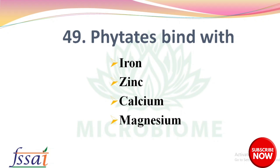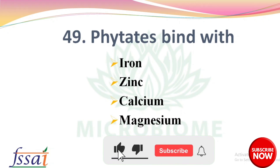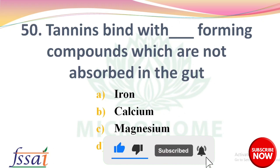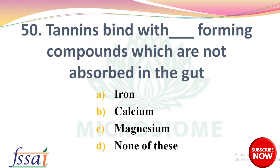Next question: phytates bind with iron, zinc, calcium, and magnesium. Next question: tannins bind with dash, forming compounds which are not absorbed in the gut — options: iron, calcium, magnesium, none of these. The right answer is option A, iron.